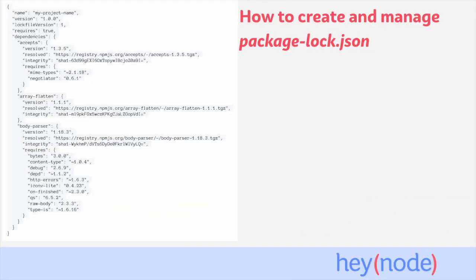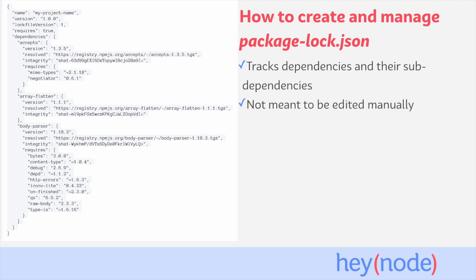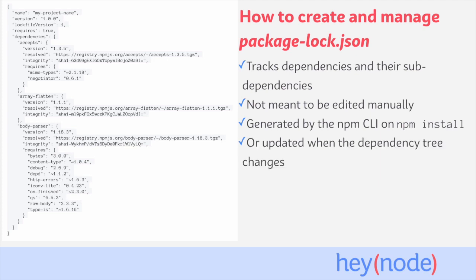Here's an example package-lock.json file. You can see the dependencies and their sub-dependencies are tracked along with their version numbers. This file isn't meant to be edited manually. If one doesn't exist, it will be generated after running npm install. Once a package-lock file already exists in your project, it will be updated whenever your dependency tree changes — by adding, upgrading, or removing dependencies.